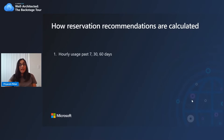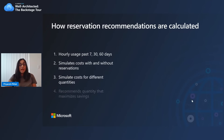The recommendation engine evaluates usage for your resources in a given scope over the past 7, 30, and 60 days. Based on the usage data, it simulates cost with and without reservations. The costs are simulated for different quantities, and the quantity that maximizes your savings is recommended. The recommendations in Advisor are based on a single scope and are based on the last 30 days of usage.